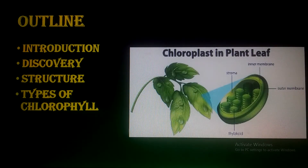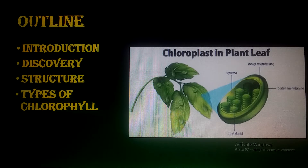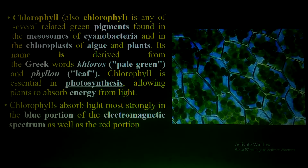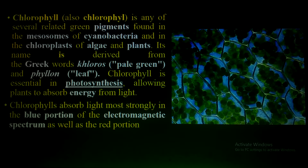In this lecture I will give you the introduction, discovery, structure, and types of chlorophyll. As we know, chlorophyll is a green pigment present in plants, algae, cyanobacteria, and other photosynthetic bacteria — which is known as bacterial chlorophyll. In the case of cyanobacteria, this green pigment is present in the mesosomes.